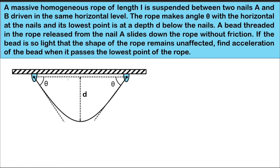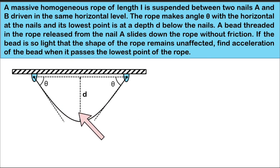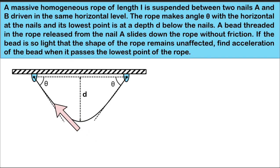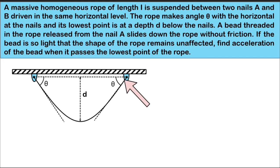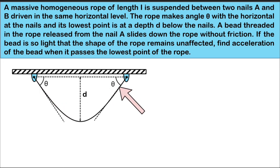Hello students! In this question, a homogeneous rope of length L is suspended between two nails A and B. These two nails are on the same horizontal line and the rope hangs between them. The rope takes a random shape, and it is given that the depth of the lowermost position from the horizontal line is equal to D. The angle made by the tangent to the rope at the point of suspension is theta with the horizontal. The total length of the rope is given as L.